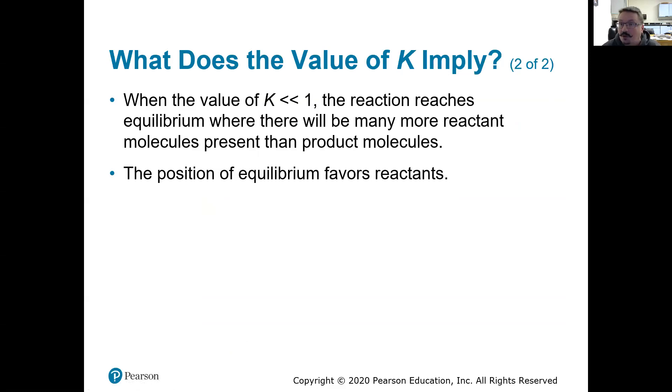What does it mean if K is very, very small or less than one? Well, now the number on the top has to be very small in relation to the number on the bottom. We're going to have a lot more reactant molecules than we do product molecules at equilibrium, so the position of equilibrium would favor the reactants.